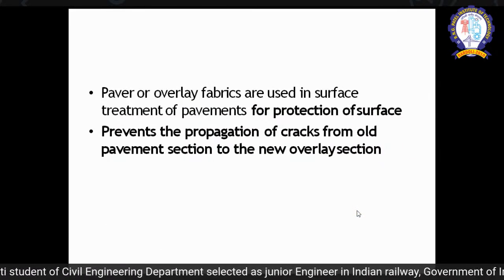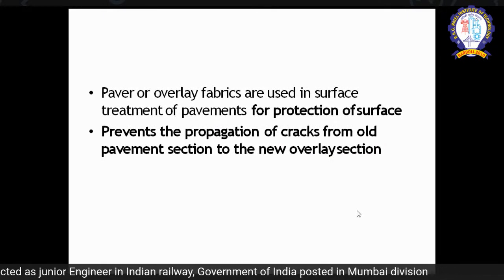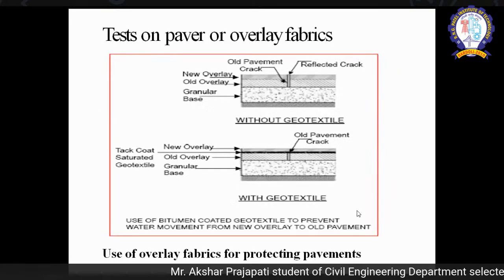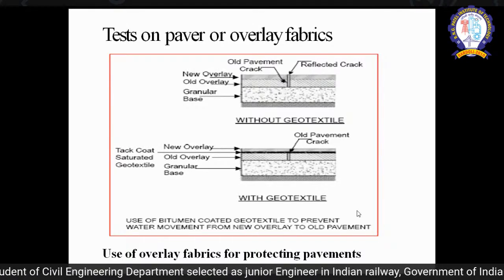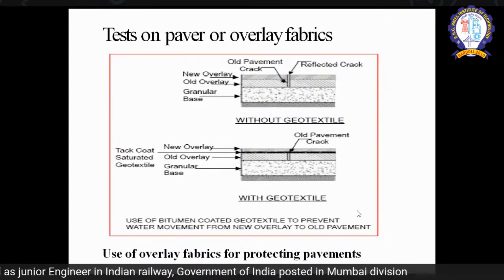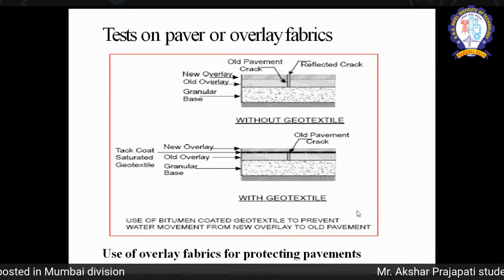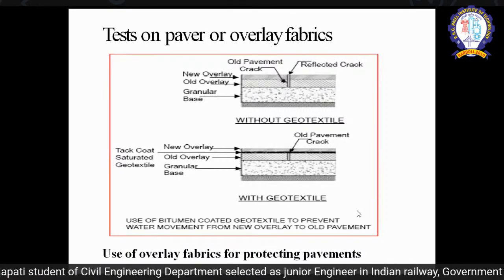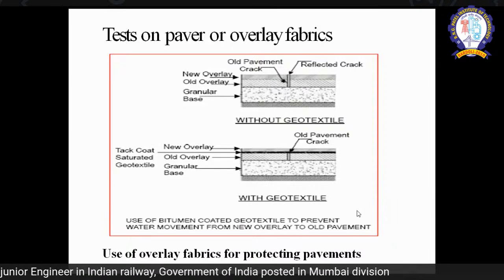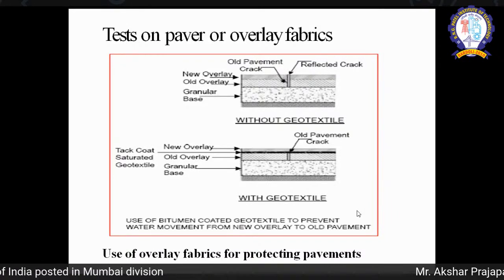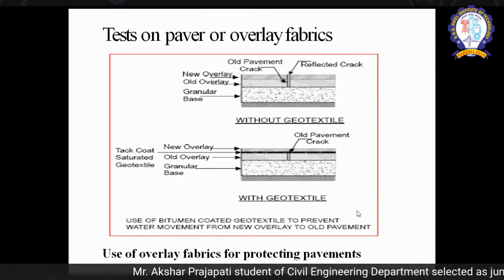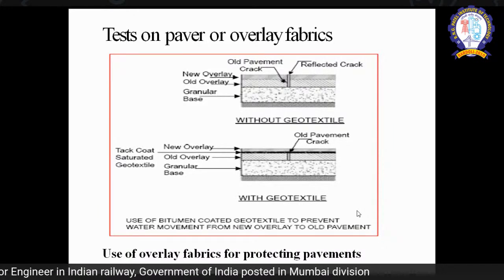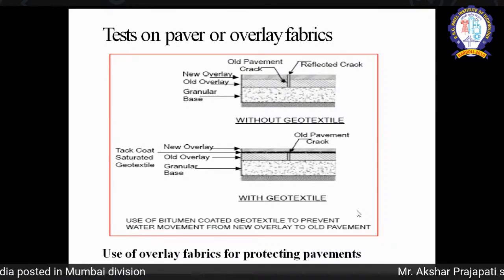In case of pavement, geosynthetics are used for surface protection and can also prevent the propagation of cracks from an old pavement section to a new overlay section. Without geosynthetics, crack formation easily propagates from the old overlay to the new overlay. But if you add a geotextile layer between the old and new overlay, it acts as a barrier so cracks do not easily reach the top. This is very common — you can go to any site and find that local laborers are already using geotextile in pavement work.